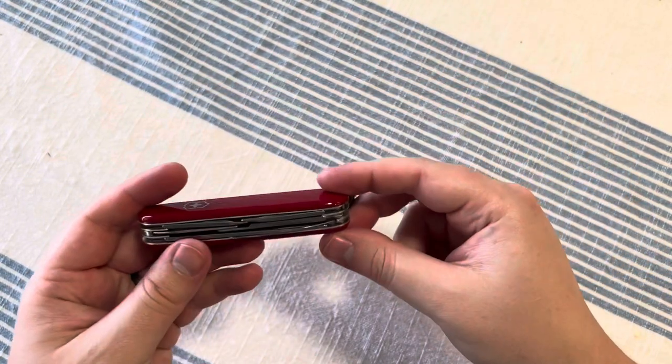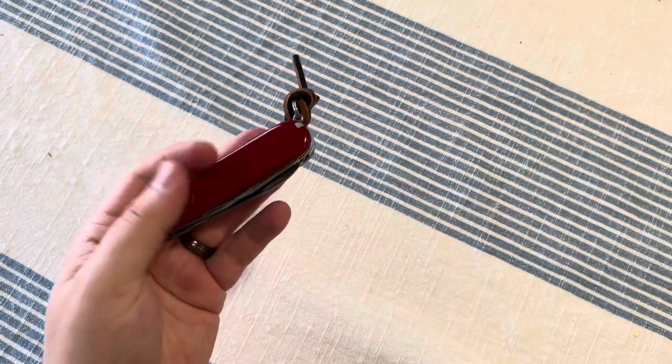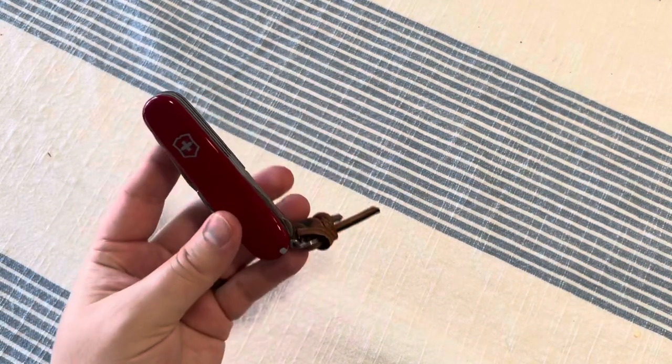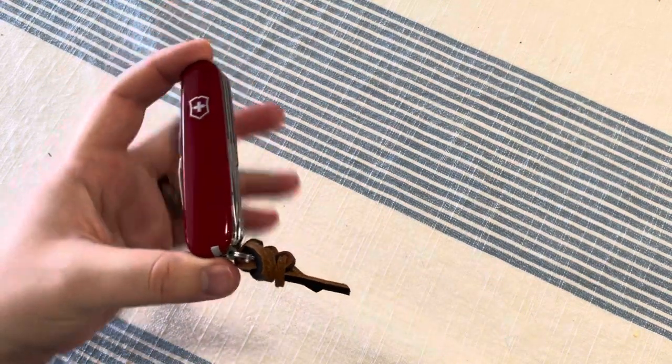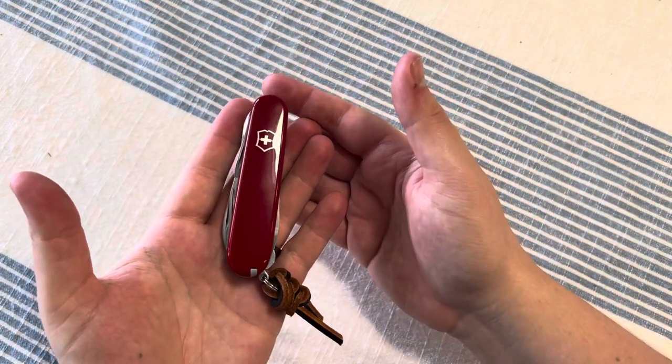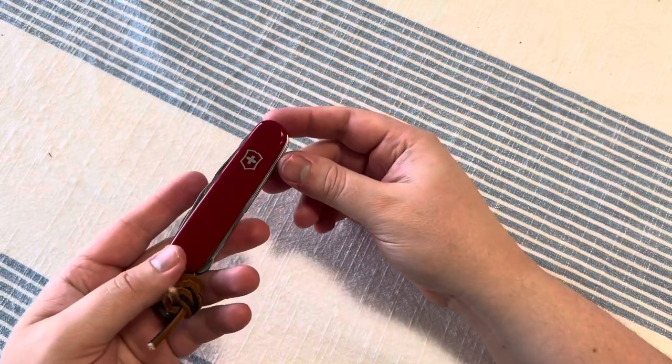Only thing this thing's missing for me would be a little pen and it would be perfect. But, Super Tinker. It's $30 and you get just about everything you'd ever want on a Victorinox system. Just about everything you'd need.